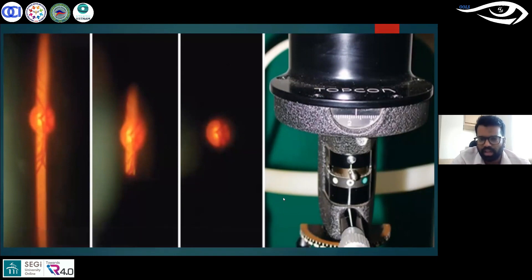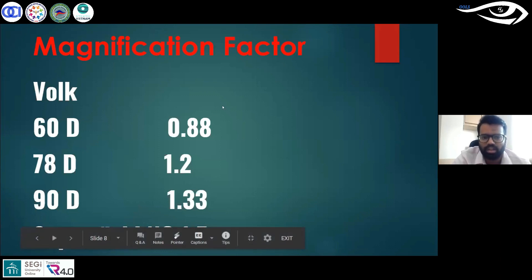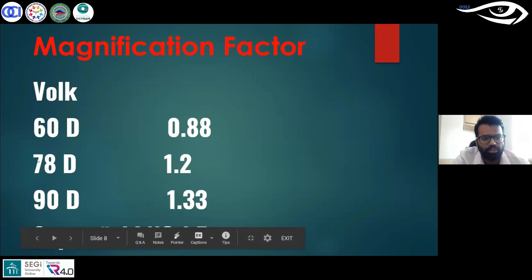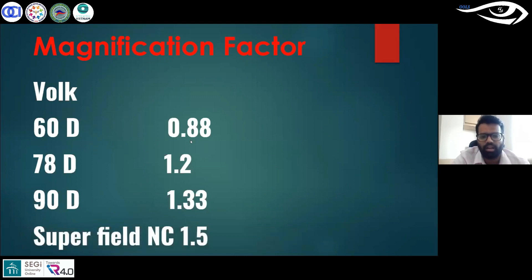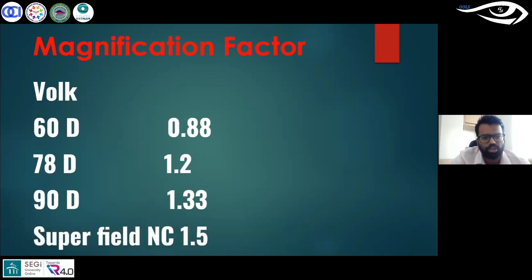When we use lenses like 90D and 78D, the lens magnifies the image, so there is a magnification factor. Whatever value you get on the slit lamp, you have to multiply it by these factors. If you are using a 90D, multiply by 1.33 because the 90D makes the image slightly smaller. If you use a 78D, multiply by 1.2. Very rarely, for those who use 60D, multiply by 0.88. If you use a superfield lens, it's 1.5. Most of us will use a 78D or a 90D, so just remember those two values.